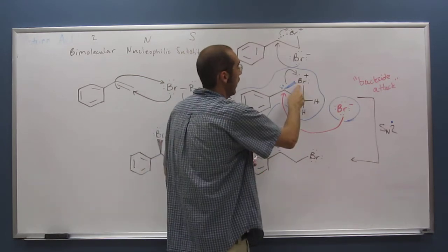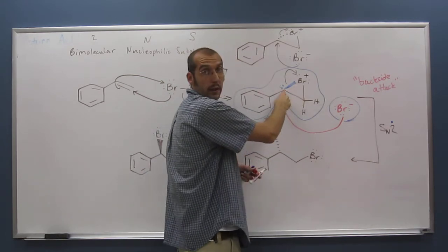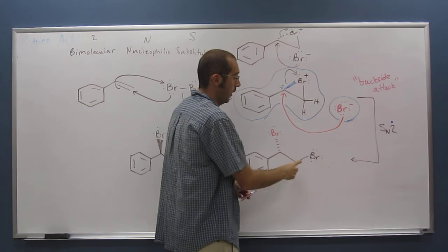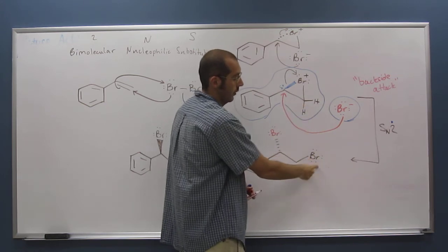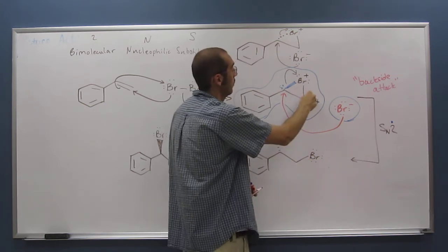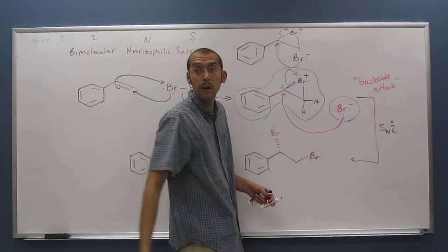Notice that brown Br was substituted at that carbon atom for the red Br. But the brown Br is still attached to this other carbon because we didn't break that bond there.